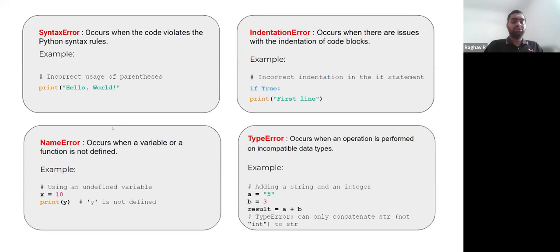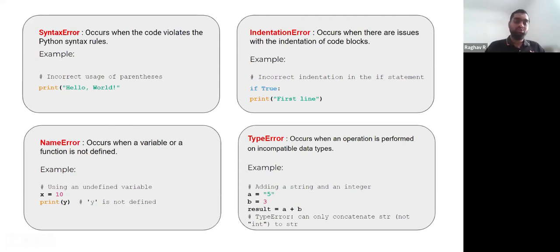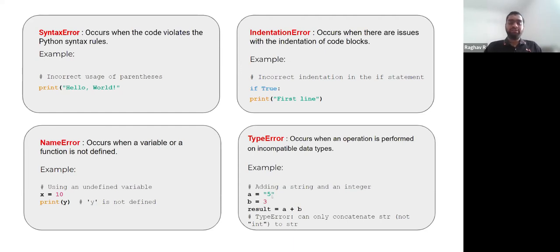We also have the name error, which occurs when we call a variable or a function that is not even defined in the code — Python does not know what that variable or function is, so it throws a name error. We also have the type error, which occurs when an operation is performed on incompatible data types. For example, adding a number to a string is not possible, so that will give a type error.